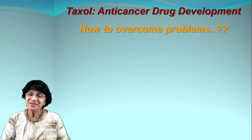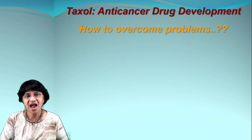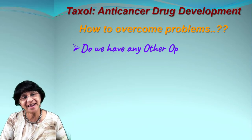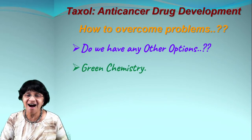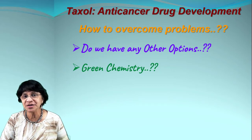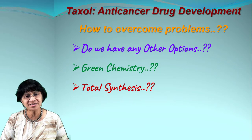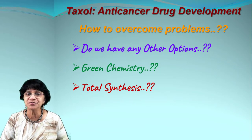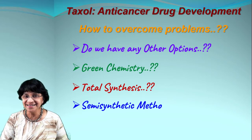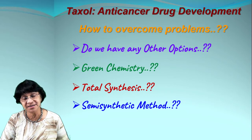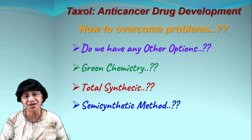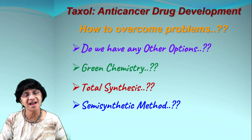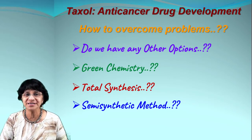The questions become: how can we carry forward taxol drug development and overcome these problems? Could we obtain taxol from a different plant or species? Are there green chemistry methods that are less energy consuming and better for the environment? Can we synthesize taxol from scratch via total synthesis, or use semi-synthetic methods combining natural product and synthetic steps? And how can we tackle the stereochemistry of taxol?